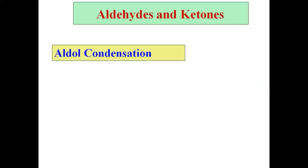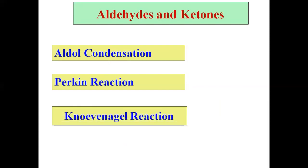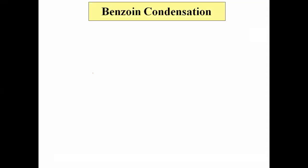We have already studied aldol condensation, then Perkin reaction and Knoevenagel condensation in detail. The first three reactions we have discussed in detail. We have studied what is meant by Cannizzaro reaction, including two examples — formaldehyde and benzaldehyde — and also the mechanism of that reaction. Now let us see one more interesting reaction: benzoin condensation.